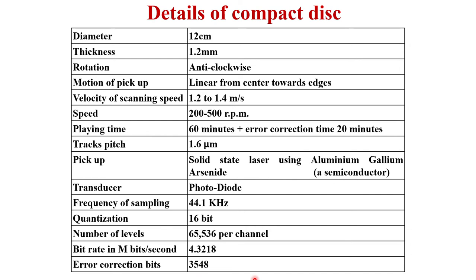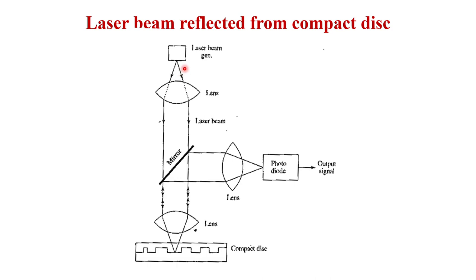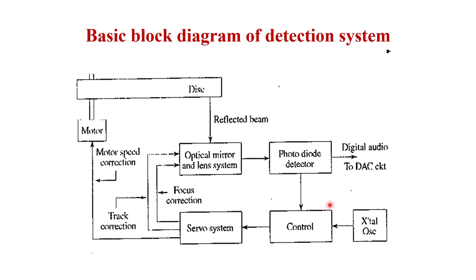The recording is done with a laser beam. The laser beam is reflected from the compact disc. The laser beam generator directs a beam through a mirror onto the compact disc, and the reflected information comes back. A partially coated mirror allows the reflected beam to pass through to a lens, which collects the light and directs it to a photodiode. The photodiode converts the light information back into an audio signal.